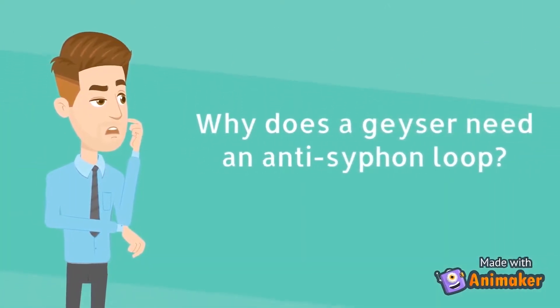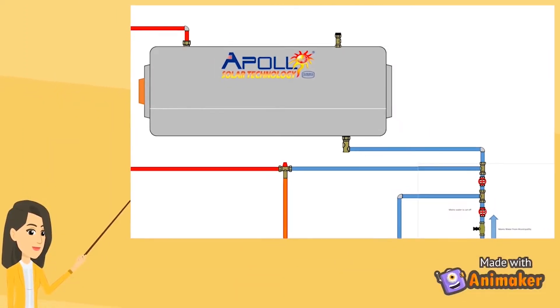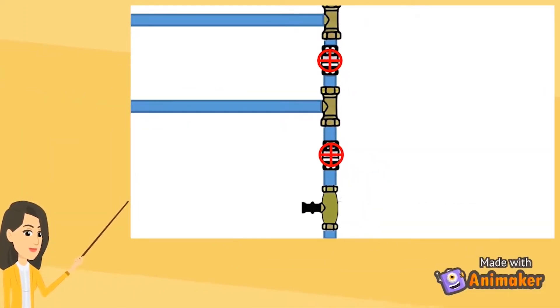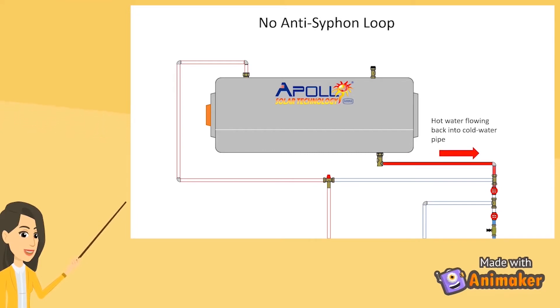So, why does a geyser need an anti-siphon loop? Well, when a geyser is installed without an anti-siphon loop and the main water supply is cut off, hot water is sucked out of the geyser through the cold water inlet and siphoning occurs, causing the geyser to drain itself.